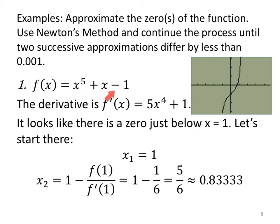Let x₁ be 1. x₂ will be 1 minus f(1) over f'(1). f(1), that's 1 + 1 - 1 = 1. f'(1) is 5 + 1 = 6. So 1 - 1/6 = 5/6. Feel free to use 5/6, but remember we want to get within a decimal accuracy, so I'm also going to use the decimal approximation.